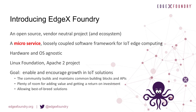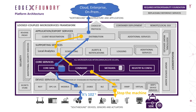Our goal is to enable and encourage growth and innovation in edge computing solutions with EdgeX. So how does EdgeX work? A collection of microservices called device services are written to speak a particular sensor protocol, ingest data from sensors, and relay that data to what we call the core data microservice. There, data is persisted at the edge, and that sensor data is also then sent on to our EdgeX export distribution microservice.